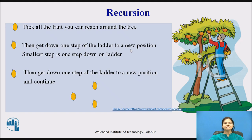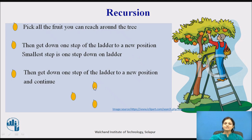In this example we will see that the task is to pick all the fruits from the tree and get down. It will take 3 to 4 steps. It will be cut down into the smallest part — he will pick the fruits and step down one step at a time.